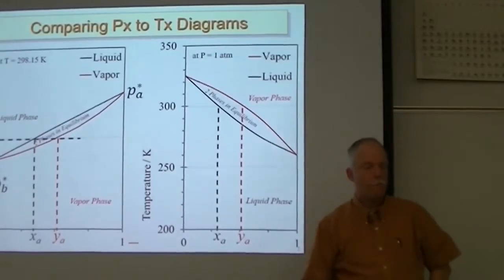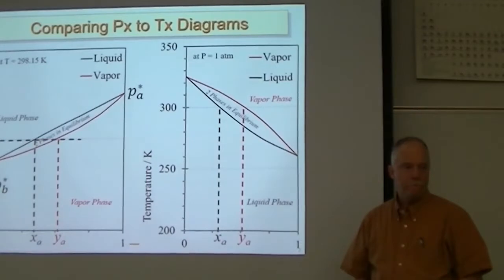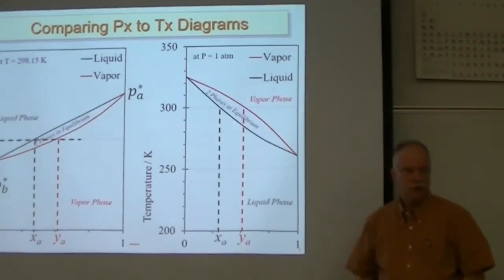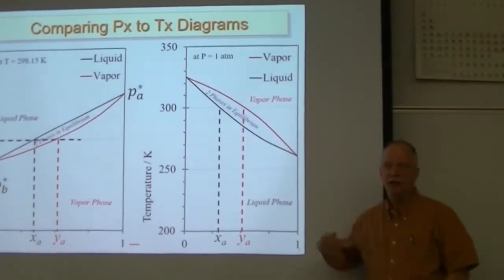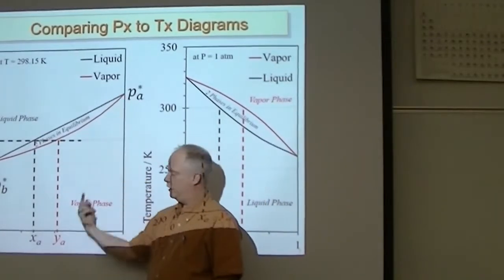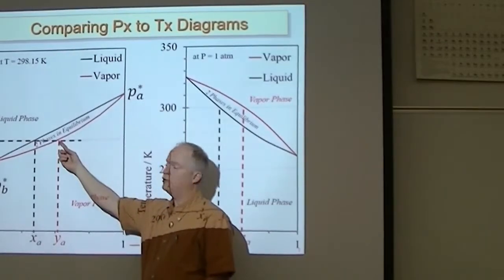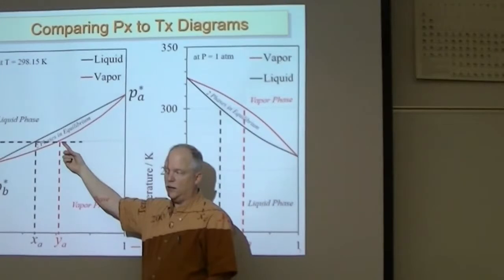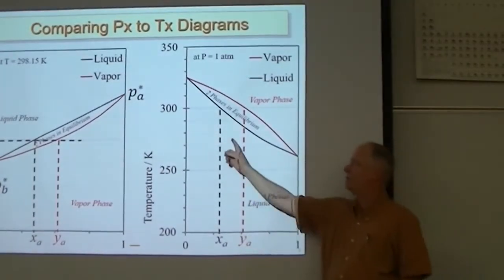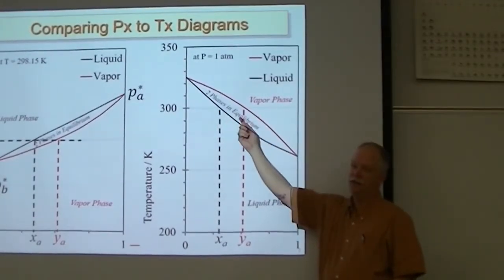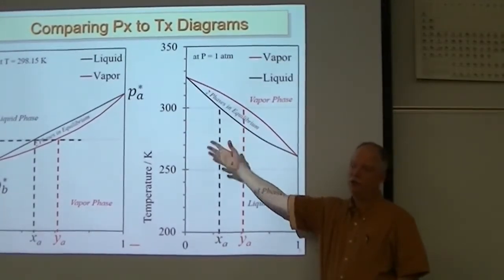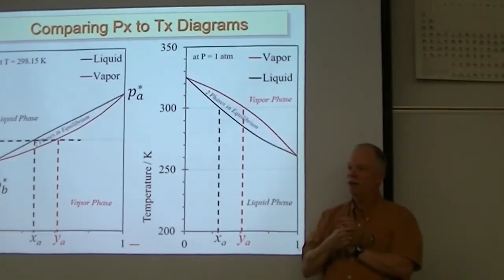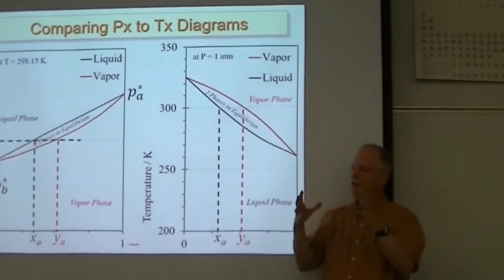A student asked: the reason YA is at a higher position than XA — those are the molar fractions of A — is because A is more volatile, so it's going to be more represented in the vapor phase. Yes, A has a higher vapor pressure, and so when it gets into the gas phase it's going to be more abundant. Higher vapor pressure means lower boiling point, and so when you vaporize it, A is more abundant in the vapor phase. Things with the lower boiling point leave the surface first and are more concentrated in the vapor phase.